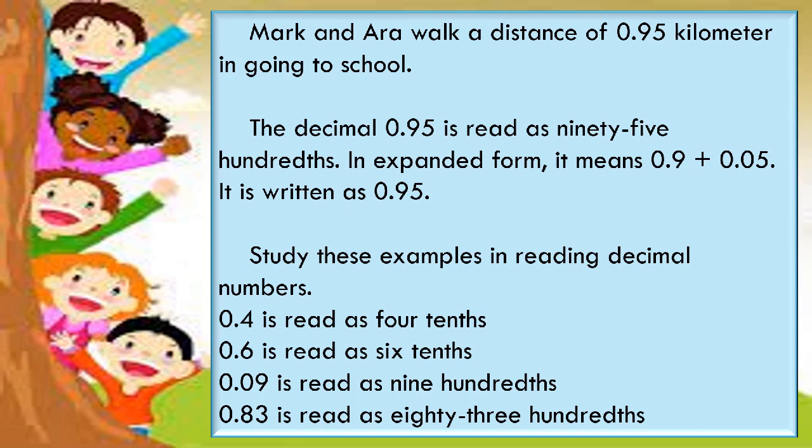I have here another example. Mark and Ara walk a distance of 0.95. The decimal 0.95 is read as 95 hundredths. In expanded form, it means 0.9 plus 0.05, and it is written as 0.95. Study these examples: 0.5 is read as 5 tenths, 0.6 is read as 6 tenths, 0.9 is read as 9 tenths.